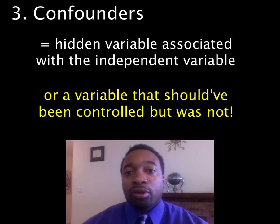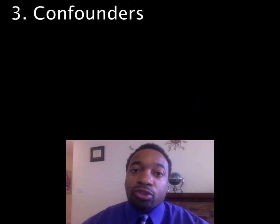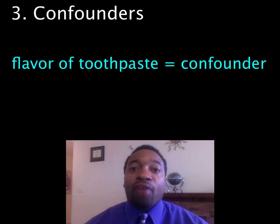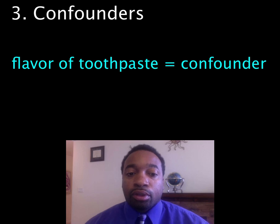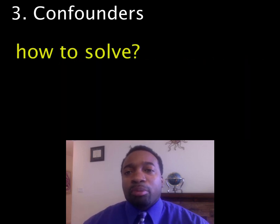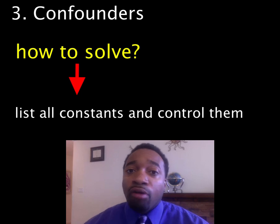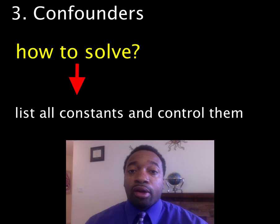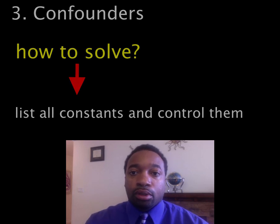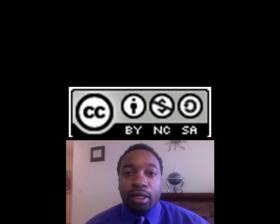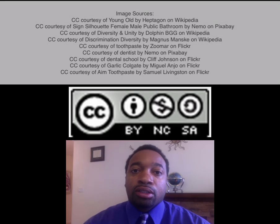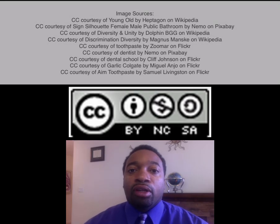While we should have kept the flavor of the toothpaste constant, we did not, and so flavor is a confounding variable. In order to minimize this, we need to identify all the possible variables in our experiment and control them — keep them constant — and only manipulate the independent variable. Hopefully you now have a good idea of sample size error, selection bias, and confounding errors.